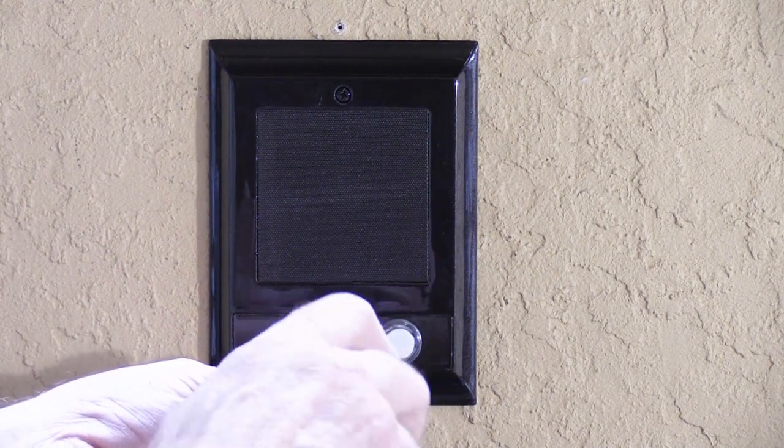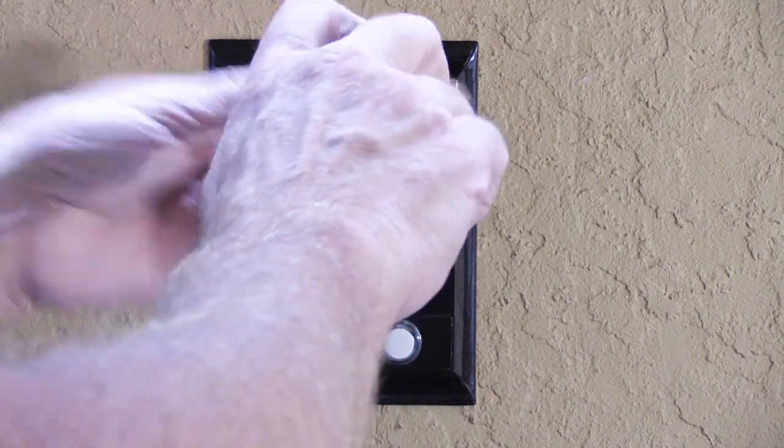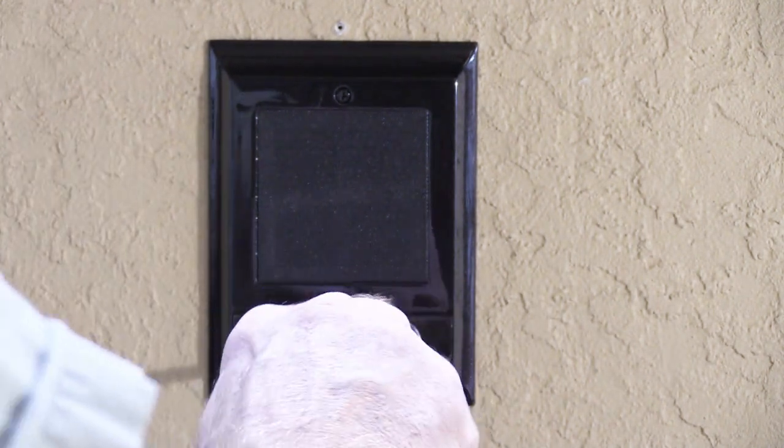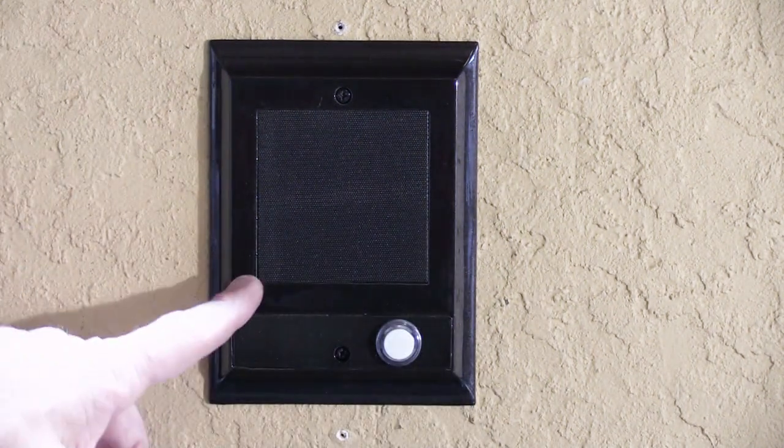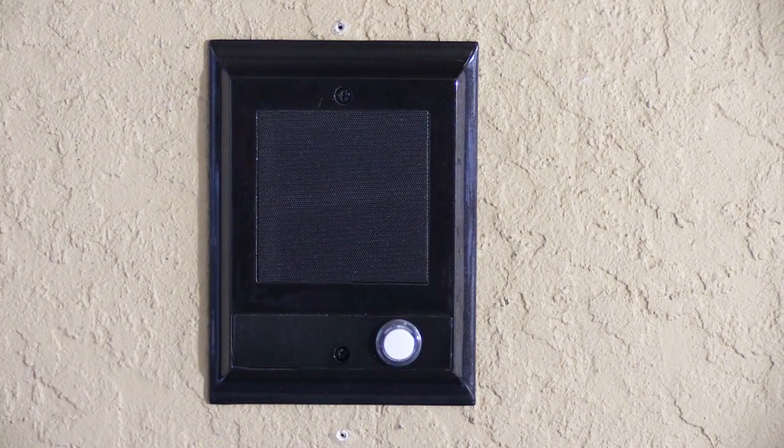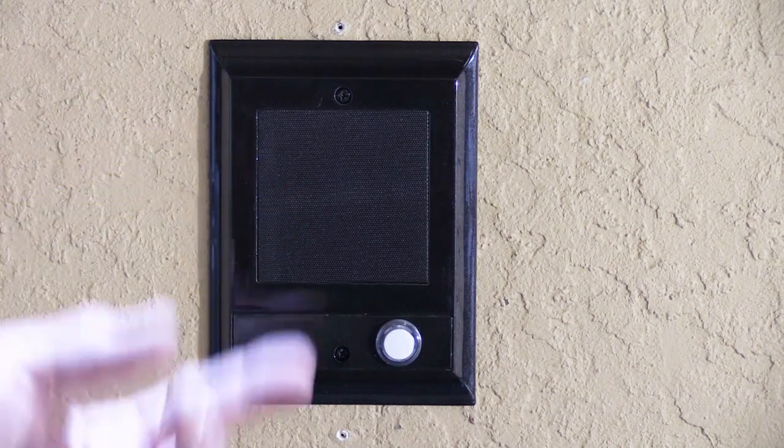When I do this, I always start at the bottom and I run the screw in most of the way to start and then do the top and then snug them up one at a time. You don't need to over-tighten it because we're just holding a little speaker on the wall. It's not that much to do. We're not building the bridge. We're just putting a door speaker on the wall. There you are.